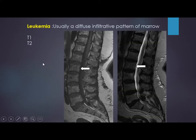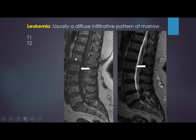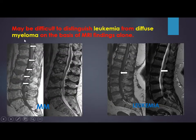Leukemia is one of the myeloproliferative disorders. Leukemia usually has a diffuse pattern, not multifocal or focal like multiple myeloma. On T1, the signal of the spine is less than the disc, so it is pathological — this is T2 in diffuse form. In this case, we cannot differentiate between leukemia and diffuse myeloma. To reach the diagnosis, other lab tests and history are important. The report would be suggestive of myeloproliferative disorder — for example, plasma cell disorder for myeloma, WBC for leukemia, or RBC for polycythemia rubra vera.